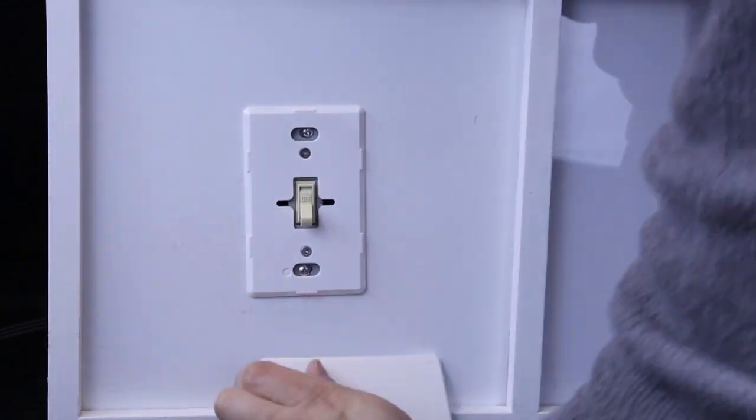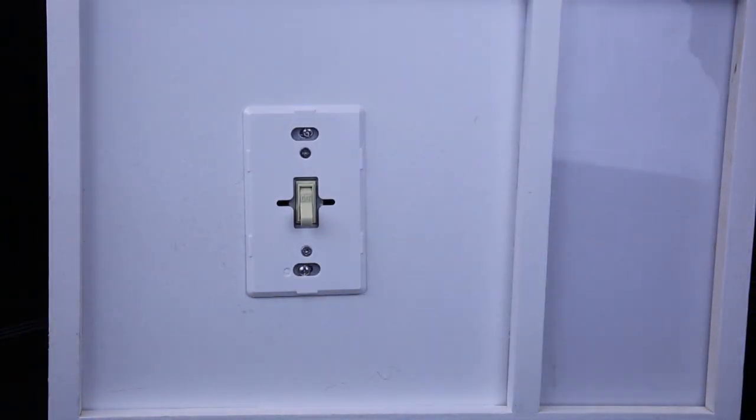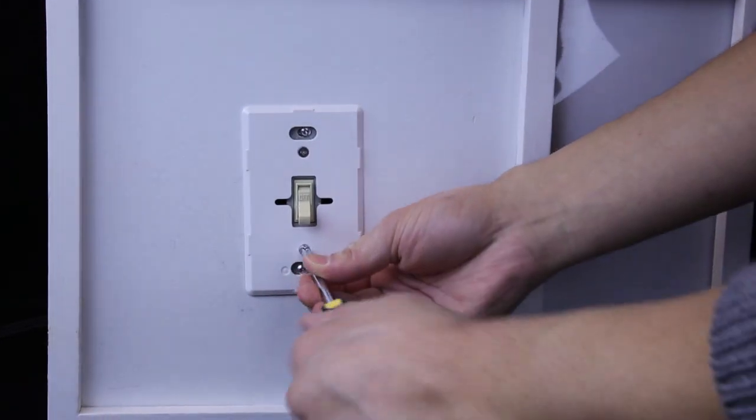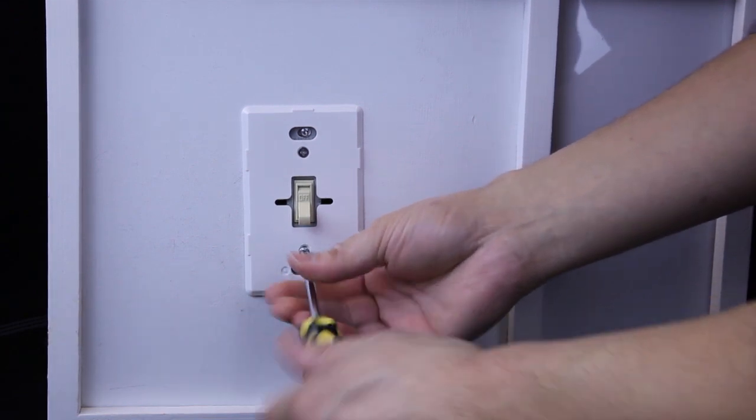Typically, you'll need a Phillips head screwdriver and a pair of pliers to do the job. First, unscrew your existing switch from the wall.